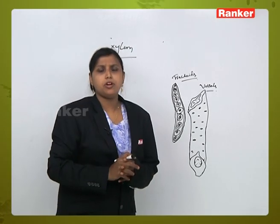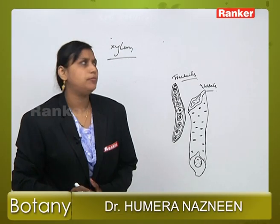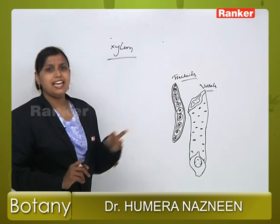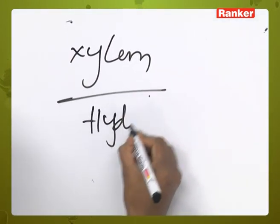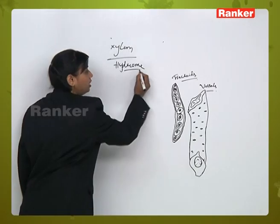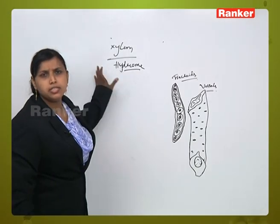The first and foremost complex tissue we have in our syllabus is xylem. Xylem is alternatively known as hydrome.